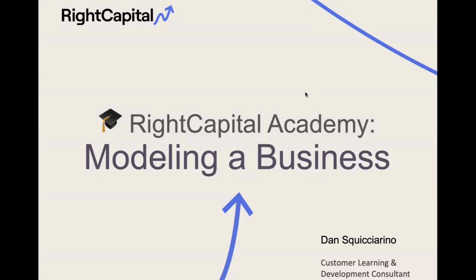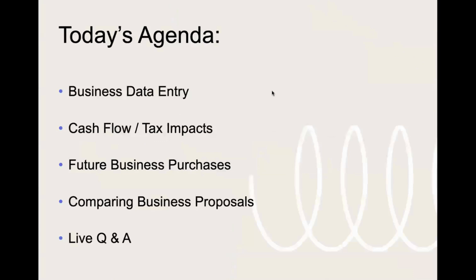Before we pivot into Right Capital, let's take a quick look at our agenda. We're going to start by reviewing the data entry process for business assets, then look at the cash flow and tax impact of those business entries. We'll then look at modeling future business purchases for clients who plan to purchase one in the future, and then pivot into the retirement analysis area for proposal comparisons related to business purchases and potentially selling businesses at different times to fund cash flow needs.